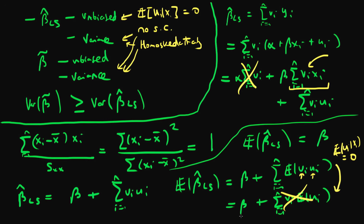This ensures that beta-hat least squares is in fact unbiased. So we've done the first part of our proof. The next part we're going to be deriving the variance of least squares estimators, assuming no serial correlation and that our errors are homoscedastic. I'll see you then.